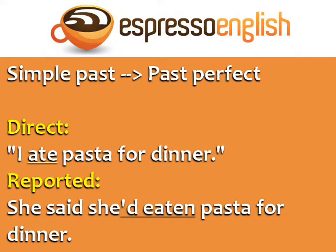Simple past verbs become past perfect. Direct: 'I ate pasta for dinner.' Reported: 'She said she'd eaten pasta for dinner.'